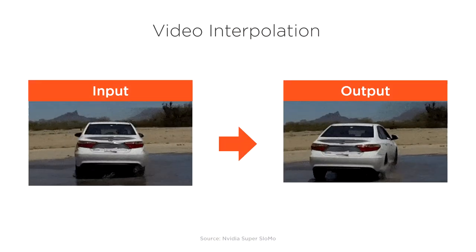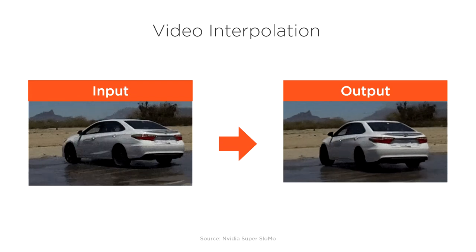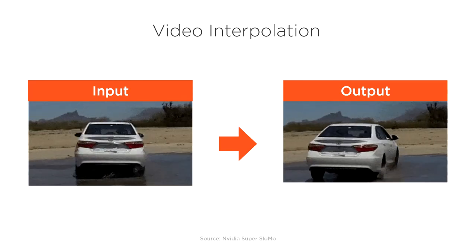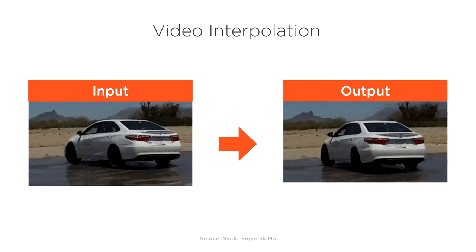For example, we can create slow motion footage from existing regular speed footage. We provide the model with a low frame rate video as input, then the model produces a high frame rate video as output.